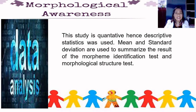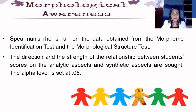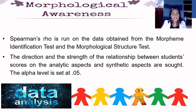For the data analysis, this study is quantitative; hence, descriptive statistics was used. Mean and standard deviation are used to summarize the results of the morpheme identification test and morphological structure test. To answer the research question concerning the degree of the students' morphological knowledge, Pearson's r was run on the data obtained from both tests. The direction and strength of the relationship between students' scores in analytic and synthetic aspects are sought. The alpha level is set at 0.05.